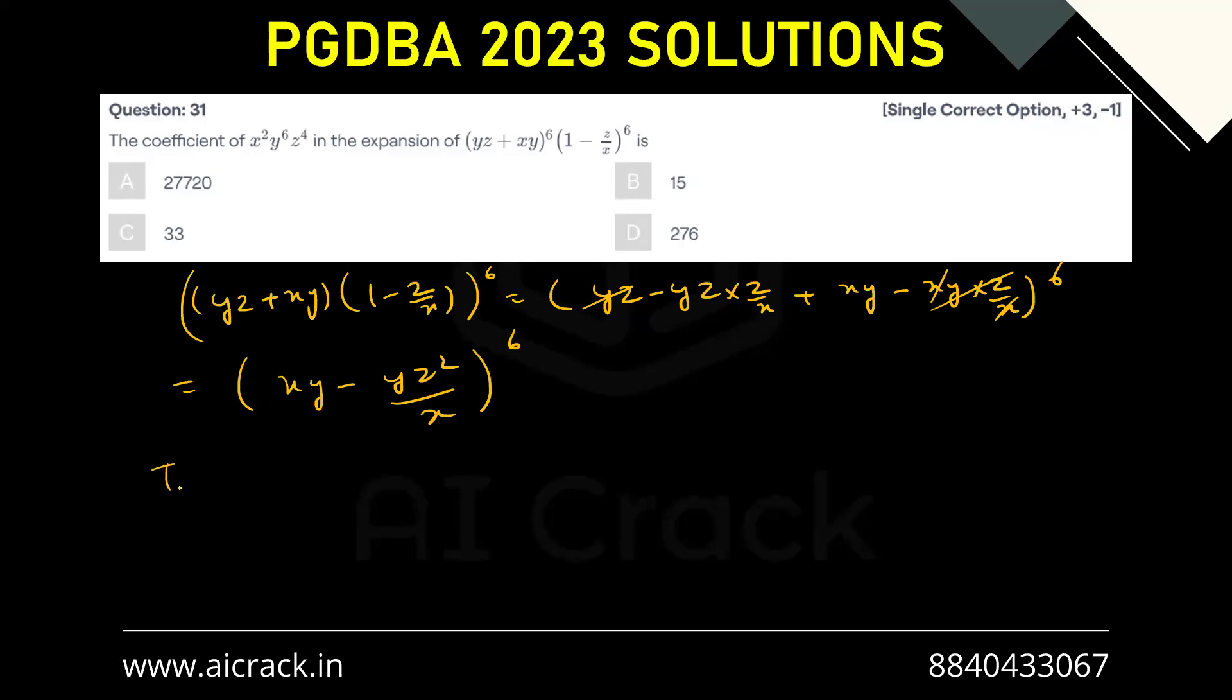Now if you want to write down t_(r+1) for this one, what we will be getting? 6Cr (xy)^(6-r) multiplied by (-yz²/x)^r.